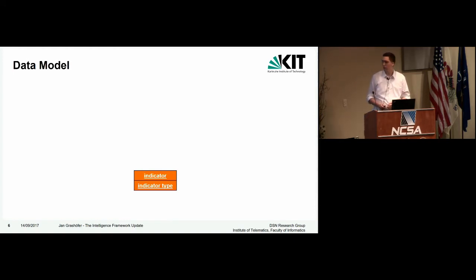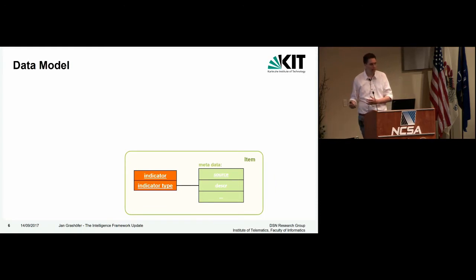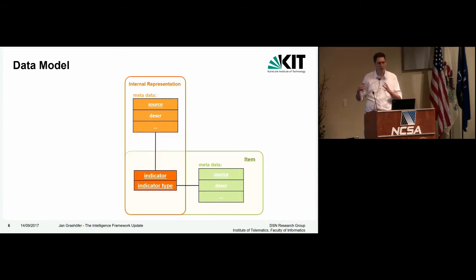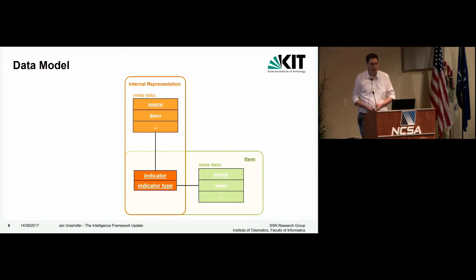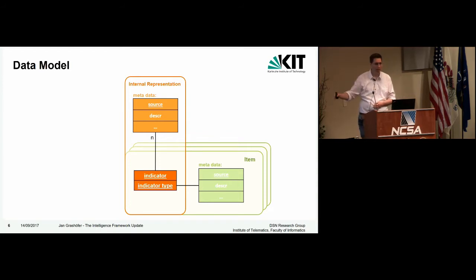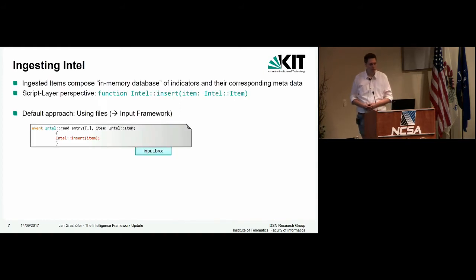If you want to feed data into Bro, you don't just feed in the indicators but also some metadata — especially the source, and by default also description and other things. That data is fed into Bro and there's an internal representation. If you ingest multiple items, multiple intelligence items might share the same indicator and indicator type but have different metadata. Internally it's like a relational database: Bro stores the indicator and indicator type and links multiple metadata records that are keyed by the source.